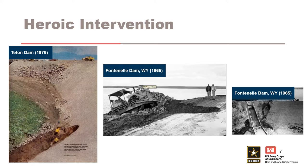At Teton Dam, a wet spot appeared on the downstream face less than about 20 feet from the abutment. The wet spot quickly turned into active seepage and a hole appeared. As the hole grew larger, two bulldozers were dispatched to push boulders and material into the hole, but it continued to erode faster than they were able to fill it. The note in the bottom right corner of the photo reads: 'After vainly trying to fill the breach and embankment of Teton Dam, two CAT operators back towards safety as their bulldozers slide into the widening gap.' The dam failed shortly after this photograph.